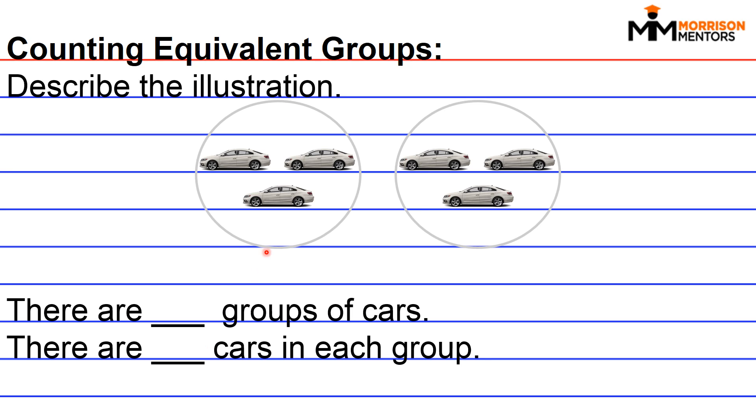The first thing that you are going to do is count the number of groups enclosed by circles. So you have one group here and group two or a second group on the right hand side. So the first blank, we can say that there are two groups of cars.